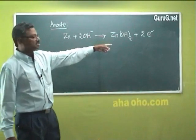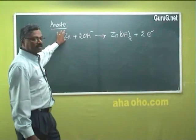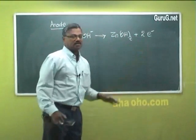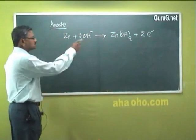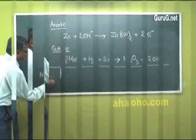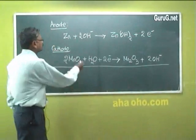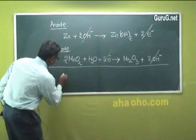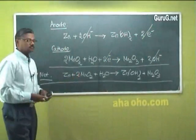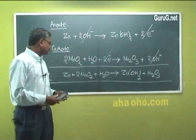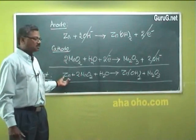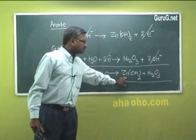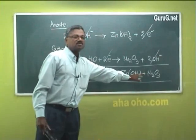Here also loss of electrons takes place. Zinc reacts with OH⁻ ions to form zinc hydroxide and 2 electrons. These electrons are utilized or gained in the cathode reaction. The net reaction in an alkaline battery is: zinc plus 2 MnO₂ plus water giving zinc hydroxide and Mn₂O₃, of course with voltage.